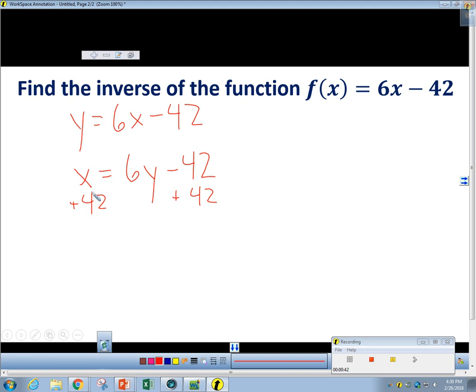So on this side, I'll have x plus 42. Then these cancel out, and I just have 6y by itself over here.